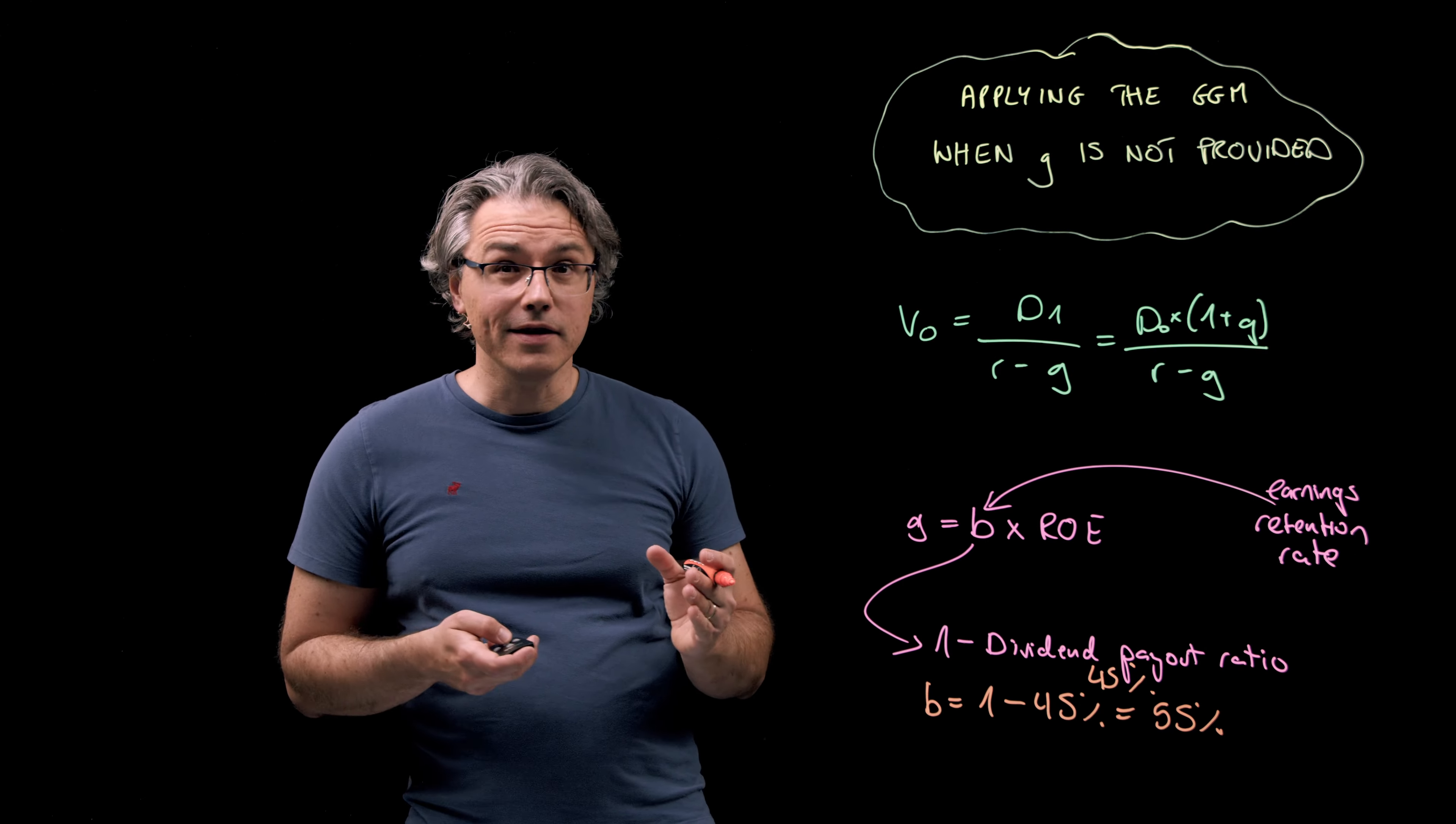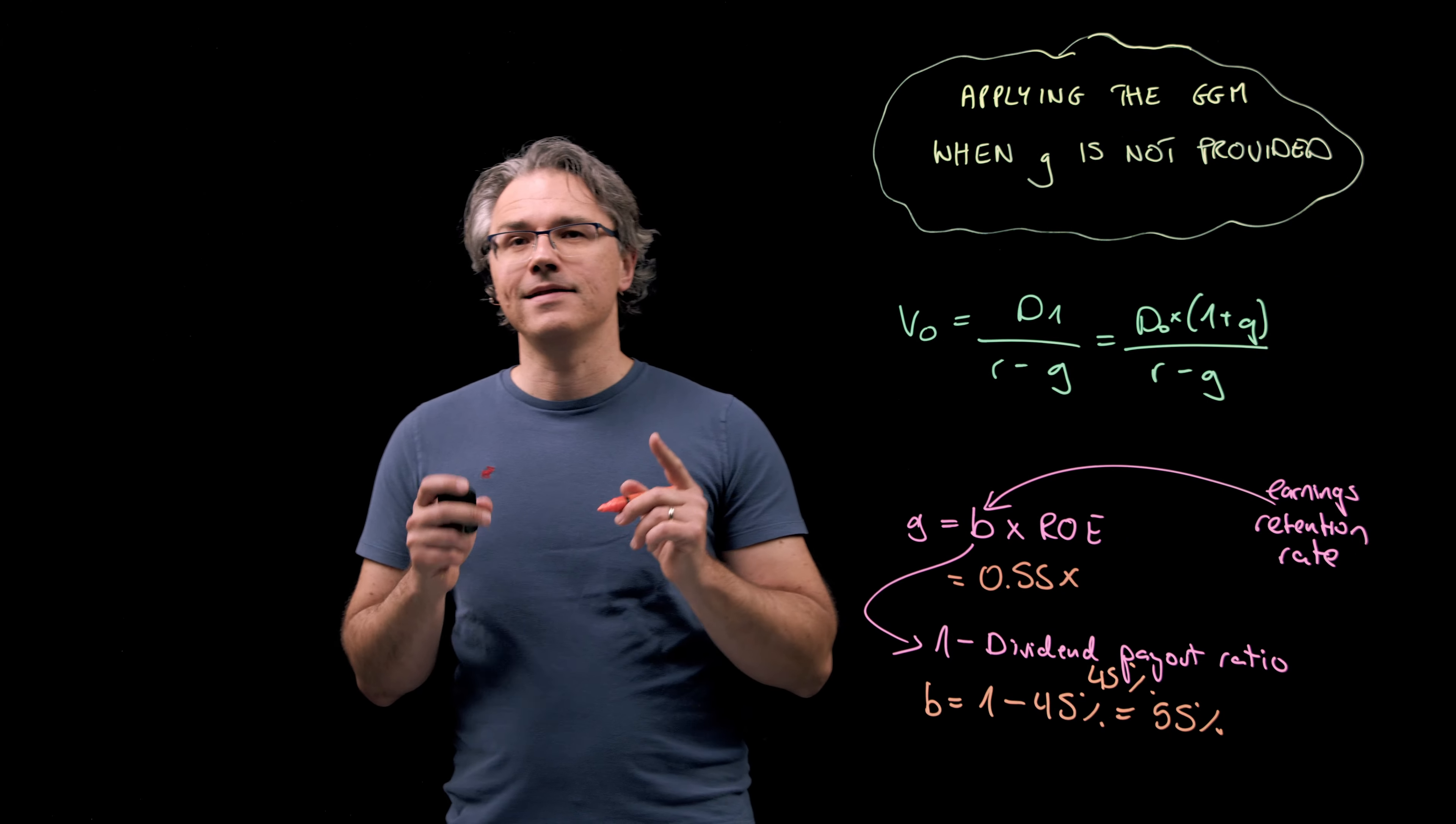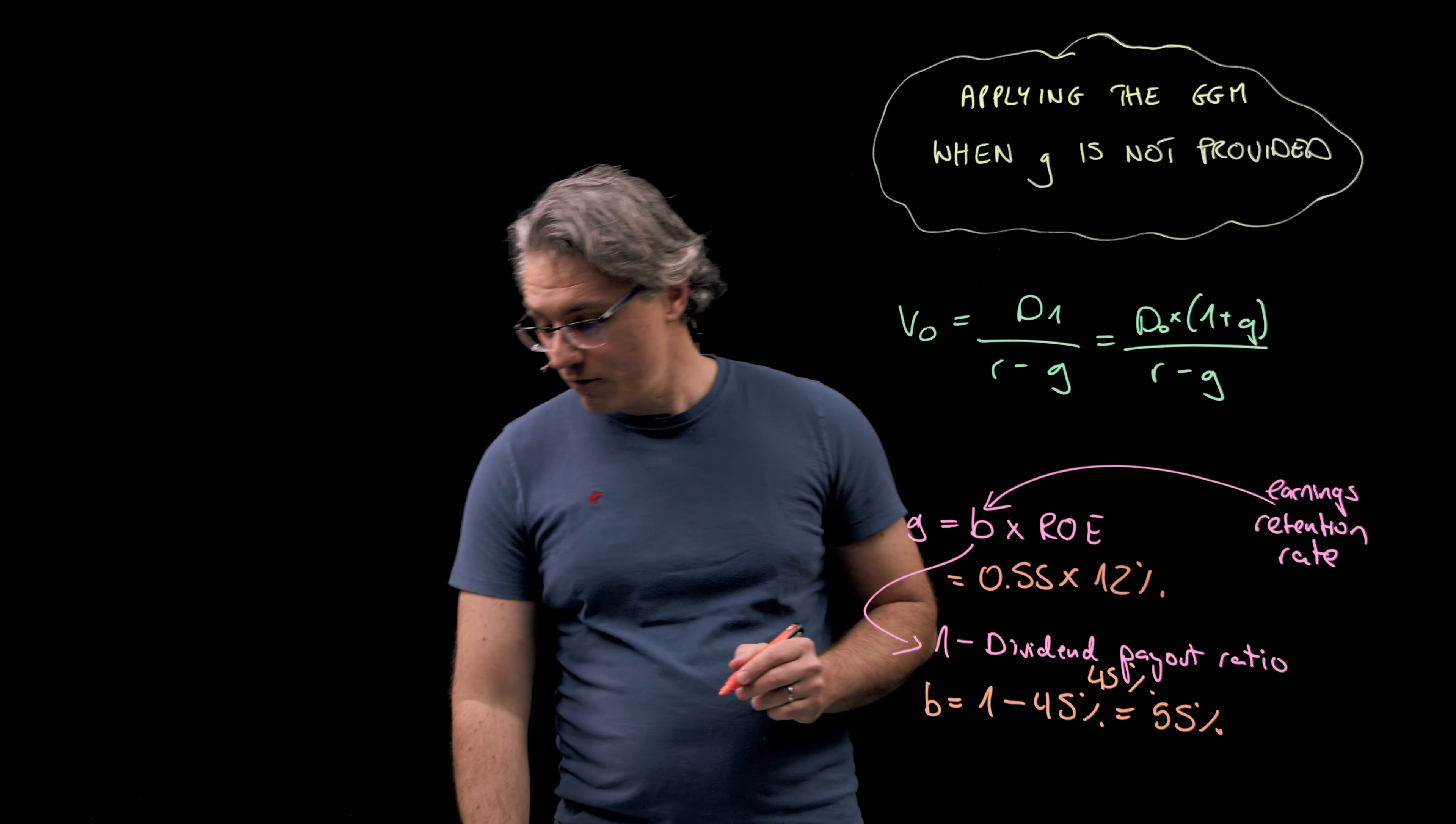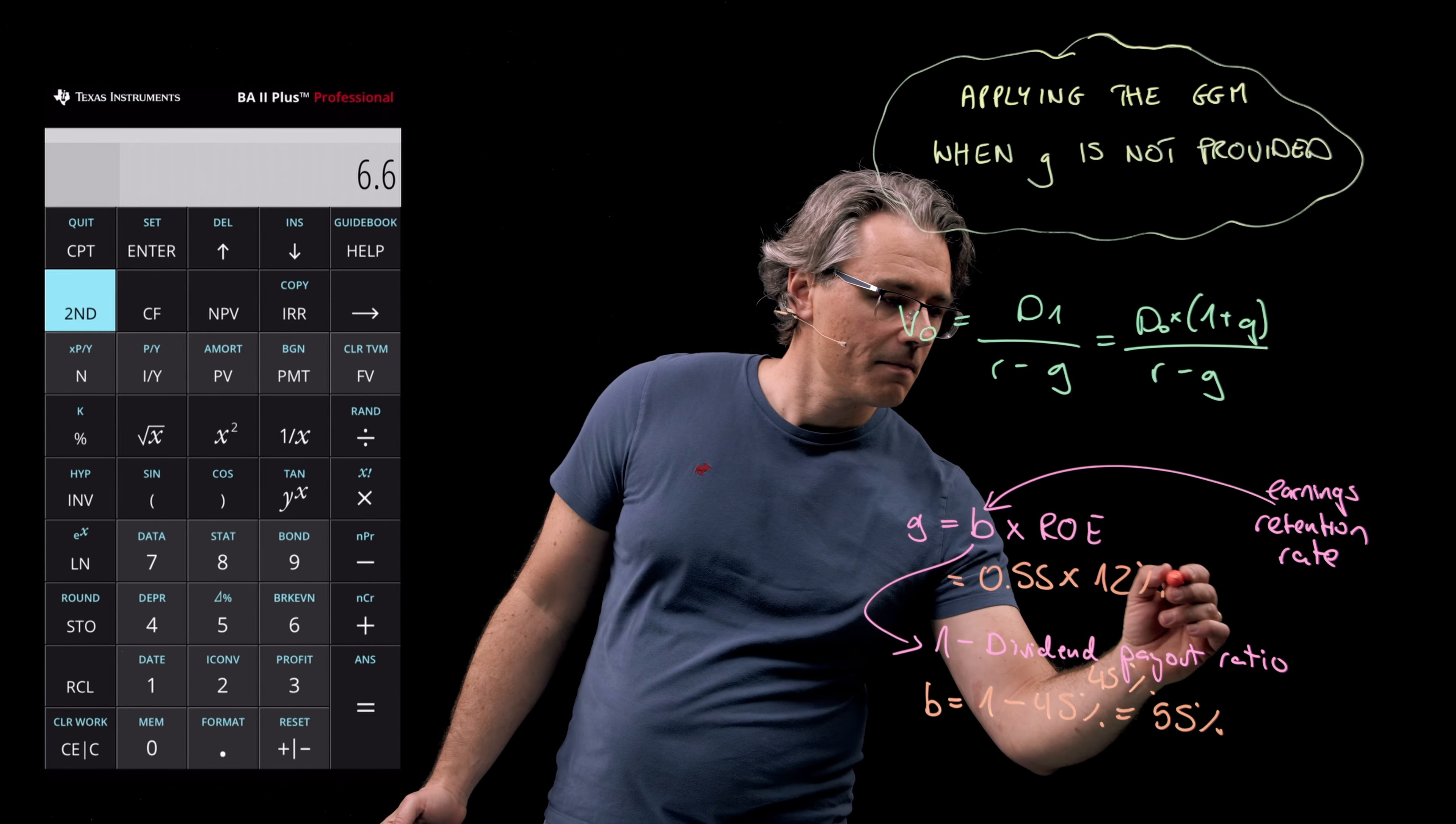So G is going to be 0.55 times an ROE of, let's check what the question was telling us, here it is at the very top, a consistent return on equity of 12%. So 0.55 times 12%, which gives, well, let's check this on the calculator, 0.55 times 12 equals 6.6%.